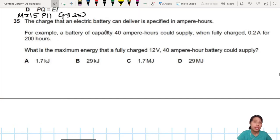So the charge an electric battery can deliver is specified in ampere-hours. I'll write down ampere times hour - oh, charge! I know this: Q equals It. So a battery of 40 ampere-hours can supply 0.2 amps for 200 hours.